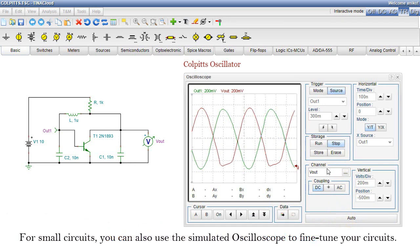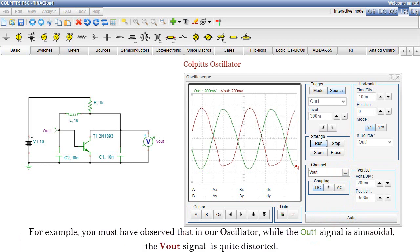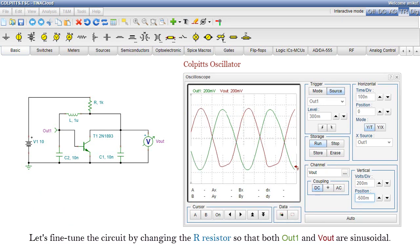For small circuits, you can also use the simulated oscilloscope to fine-tune your circuits. For example, you must have observed that in our oscillator, while the OUT1 signal is sinusoidal, the VOUT signal is quite distorted. Let's fine-tune the circuit by changing the R resistor so that both OUT1 and VOUT are sinusoidal.